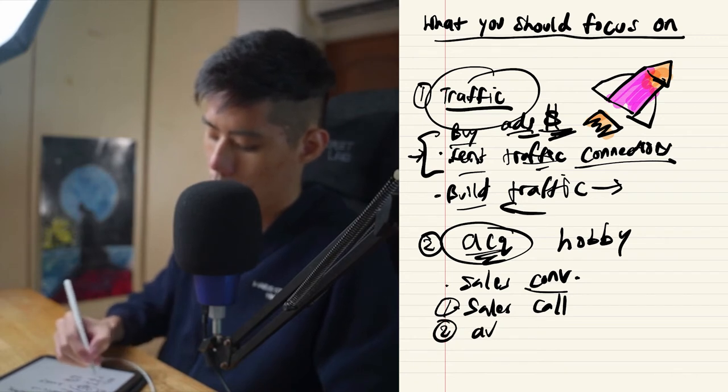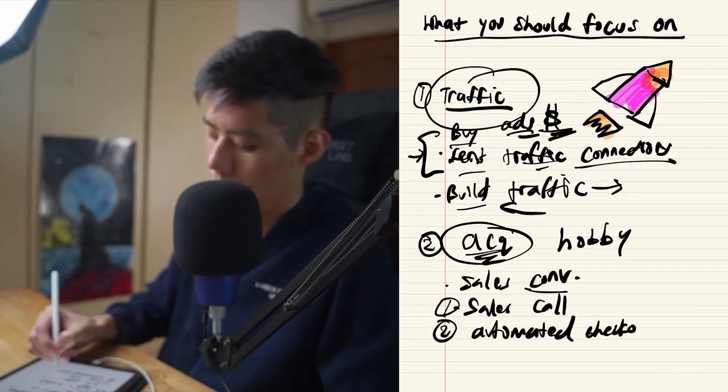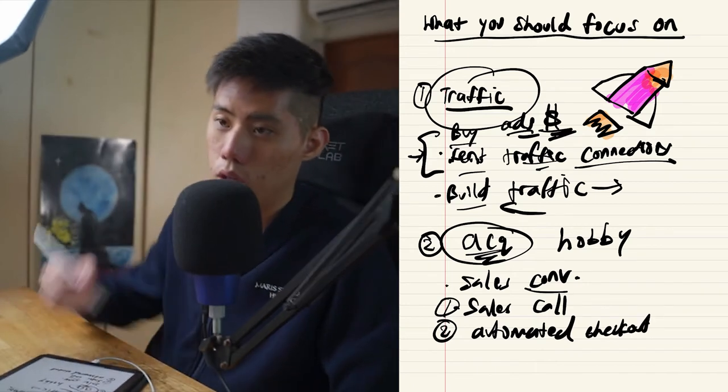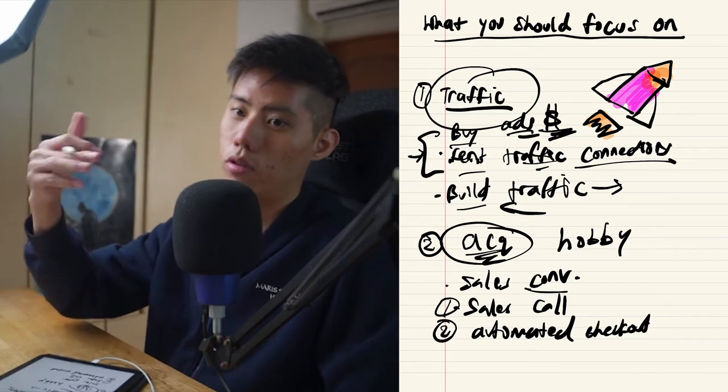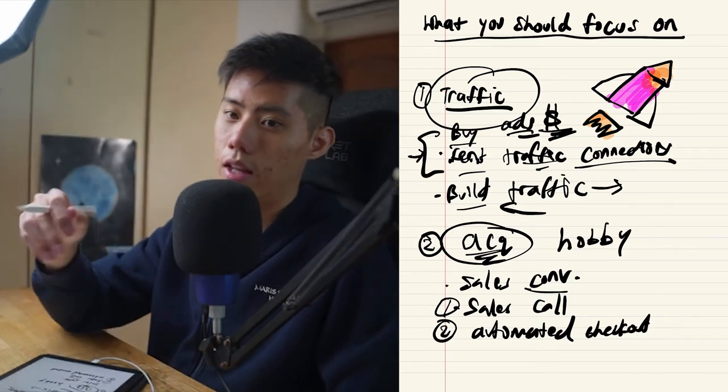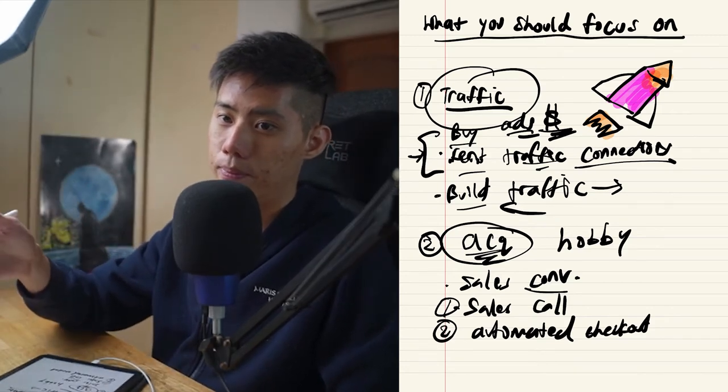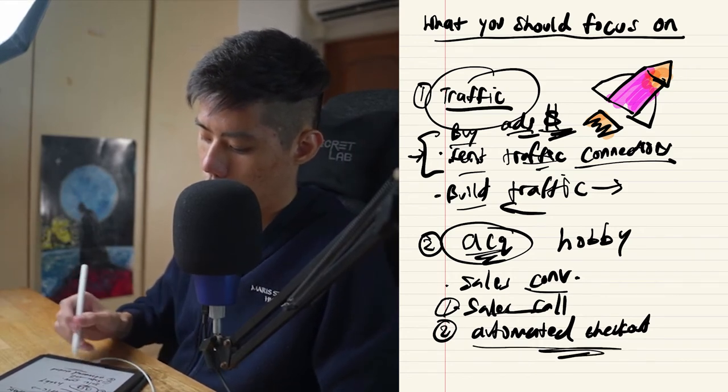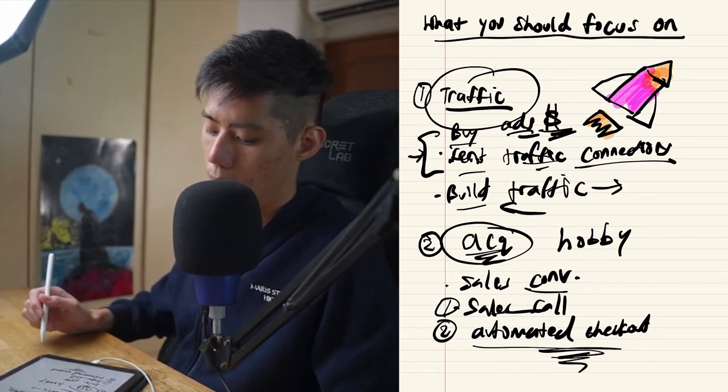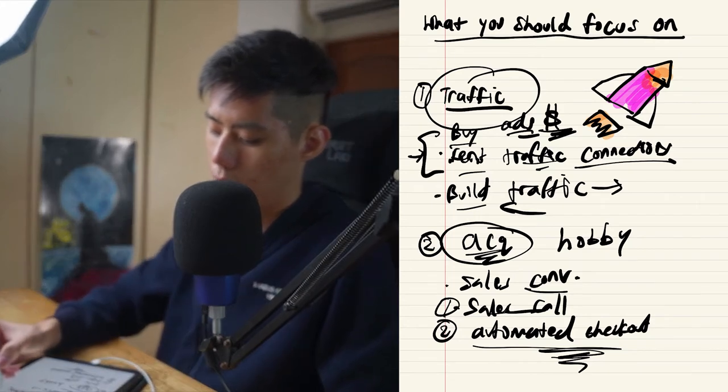Number two, are you using an automated checkout? So this is most likely in an online course format or you are selling e-commerce. So e-commerce or automated checkouts—people can just buy the thing without talking to anybody. You can put in the credit card and immediately they buy. So what is your mode of acquisition? Is it a sales call? Is it an automated checkout?